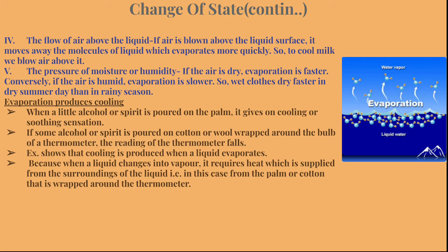If some alcohol or spirit is poured on cotton or wool wrapped around a thermometer bulb, the reading of the thermometer falls. This example shows that cooling is produced when a liquid evaporates. The cooling effect on our nails when we apply nail polish, or the fall in thermometer reading when its bulb is wrapped in alcohol-soaked cotton, is all due to evaporation producing a cooling effect.